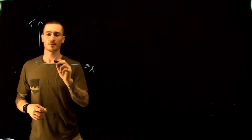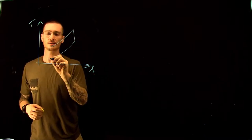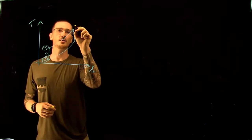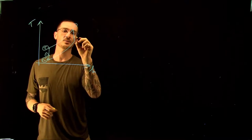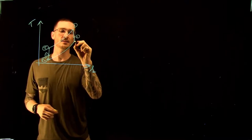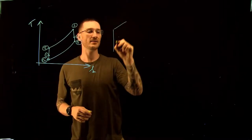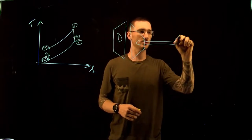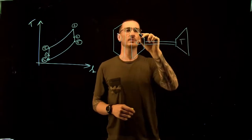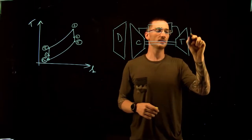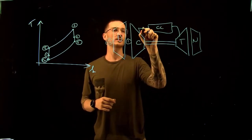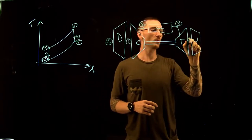First, we draw our TS diagram. This looks similar to our Brayton cycles. The inlet is labeled, point 1 is before the compressor, point 2 is before the combustor, point 3 is before the turbine, point 4 is before the nozzle, and point 5 is the exit. The system layout is: a diffuser goes to the compressor, which is attached to the turbine, then into the combustion chamber, and finally through a nozzle.